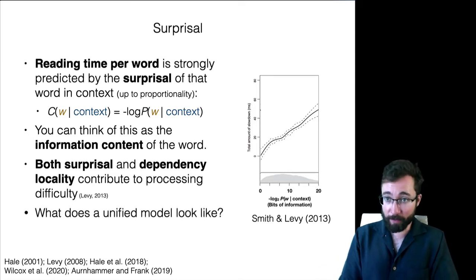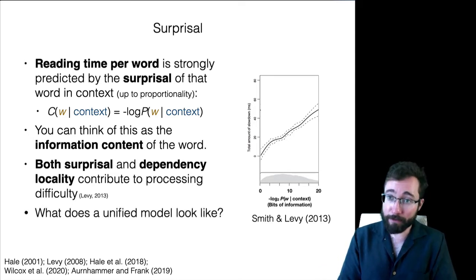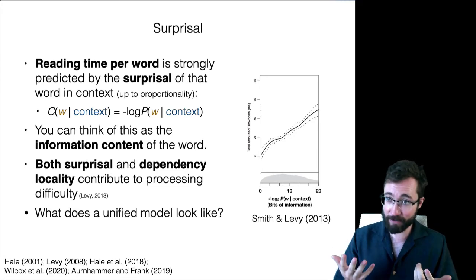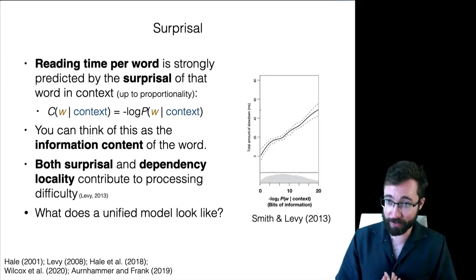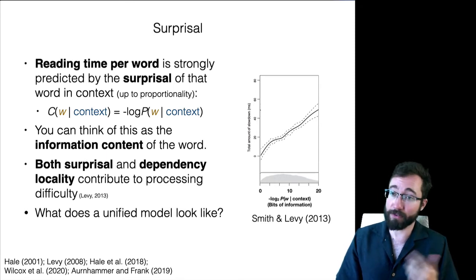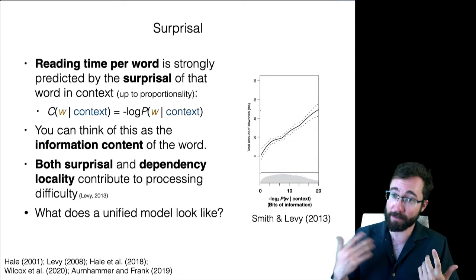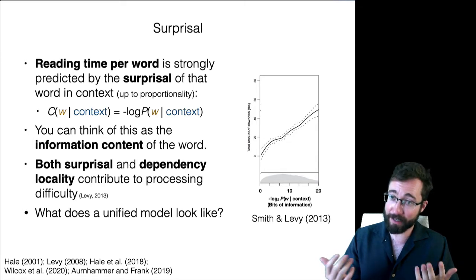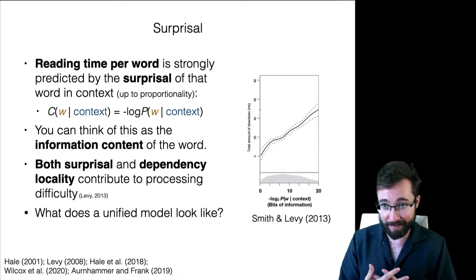What I'm going to be doing now is developing a unified model for surprisal and dependency locality, incorporating memory constraints into a surprisal model in a way that accounts for both surprisal effects, dependency locality effects, and some of the interesting interactions between those things.